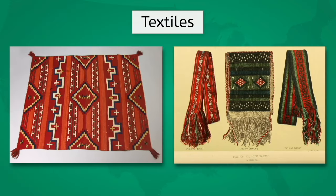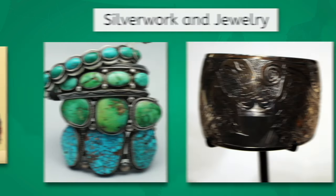Navajo and Pueblo tribes are also well known for their woven textiles. These textiles often feature complex geometric designs, which may vary between tribes and even between different clans or families within a tribe. These designs can have symbolic meanings representing spiritual beliefs, historical events, or elements of the natural world. The Navajo, Hopi, and Zuni are also well known for their silver work and turquoise jewelry. The use of silver in jewelry making was introduced after the arrival of the Spanish, and turquoise has been used since ancient times.